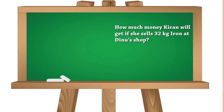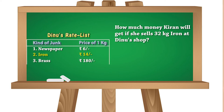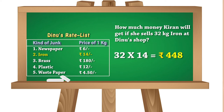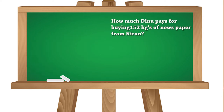Now the next problem: how much money will Kiran get if she sells 32 kg iron at the new shop? Comparing the rate list, the rate is rupees 14 per kg and she is selling 32 kg. So it is 32×14. Computing this gives the answer as 448 rupees.